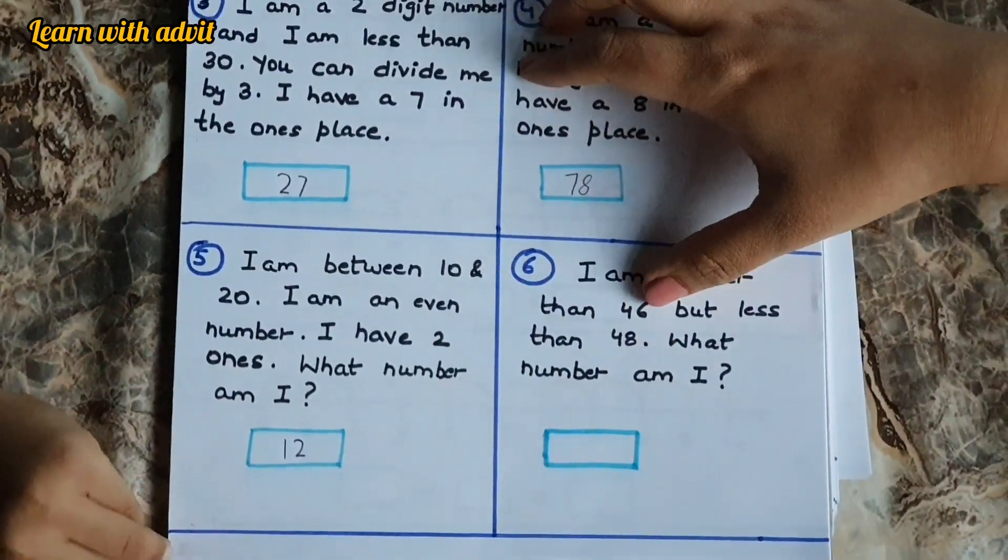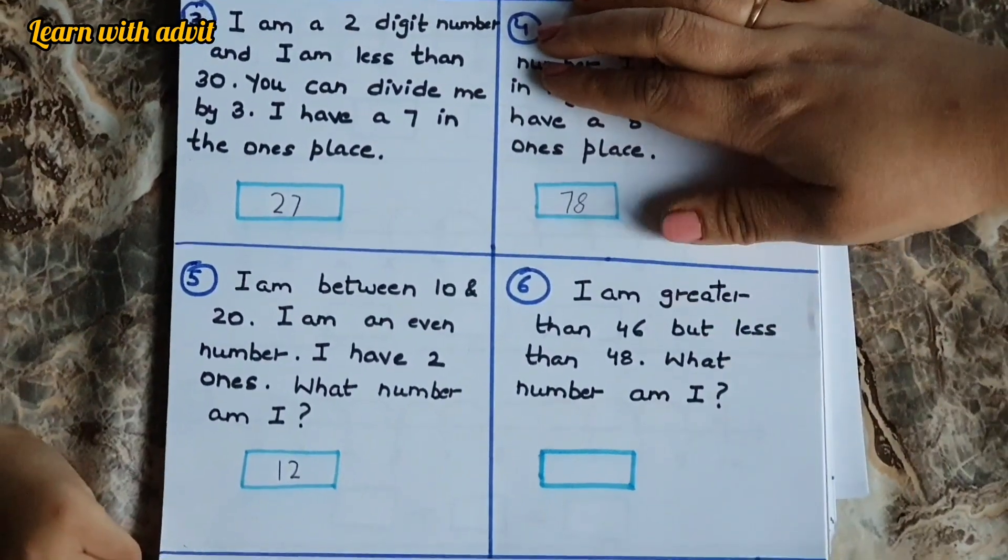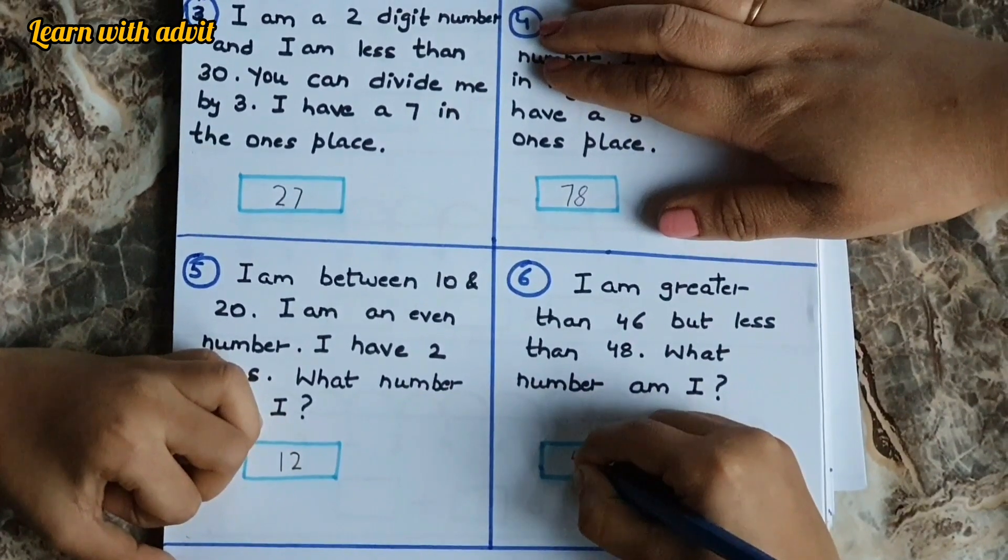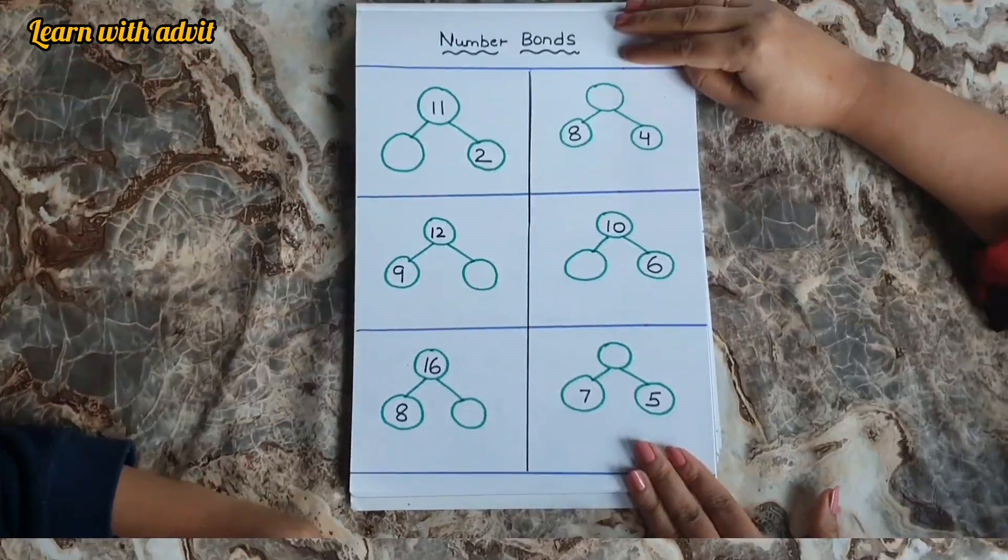I am greater than 46 but less than 48. What number am I? 46, 47, 48. It's 47.